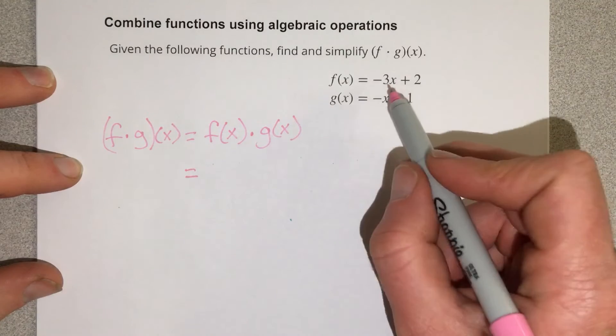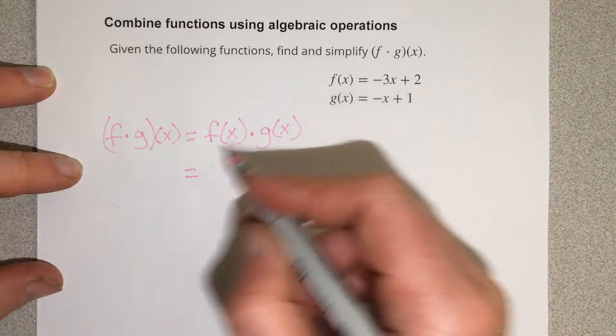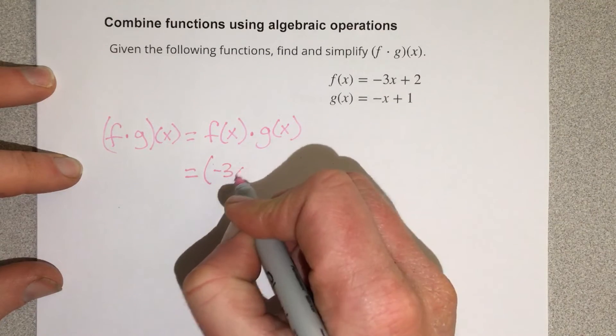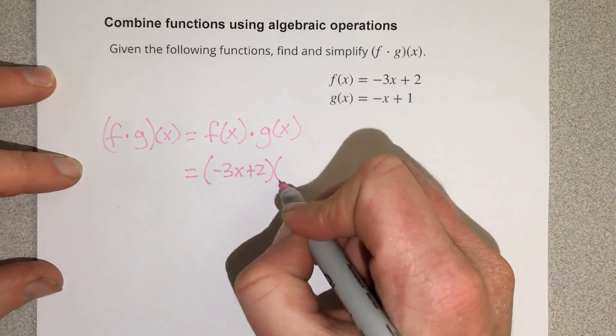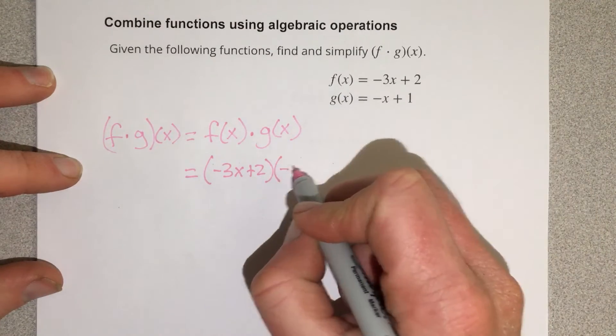So we can take the f function negative 3x plus 2, plug it in, being multiplied times g of x, which is negative x plus 1.